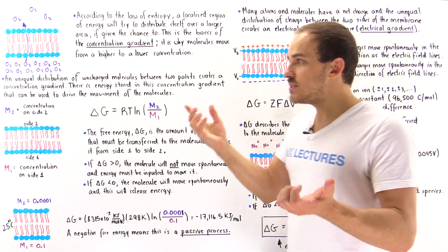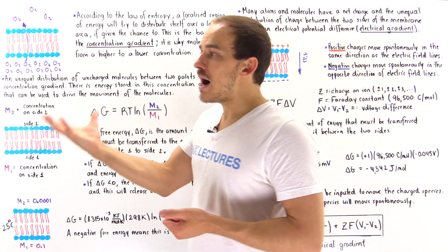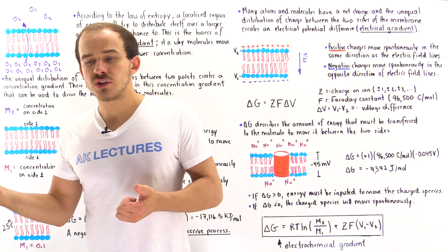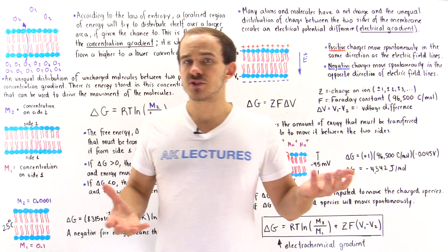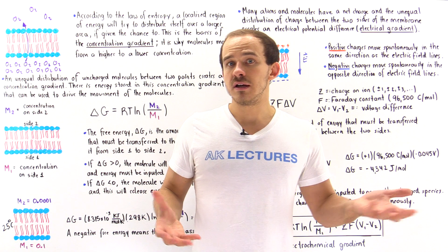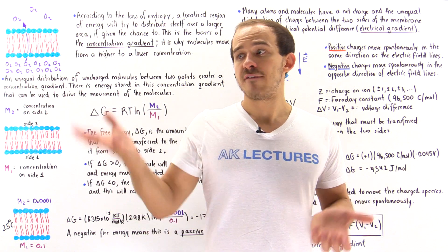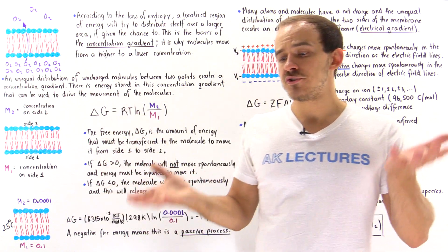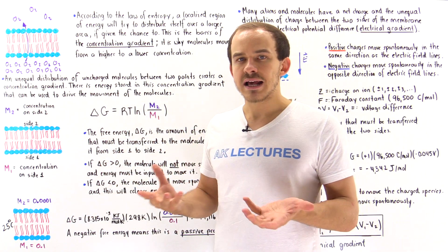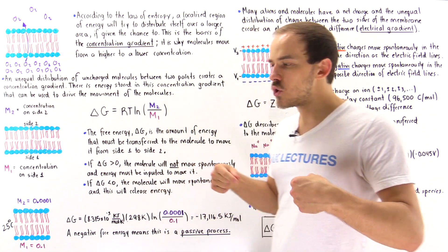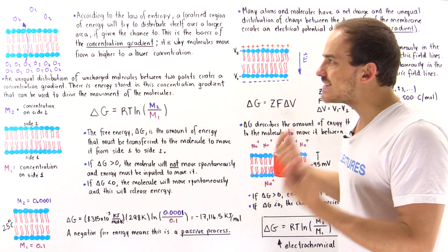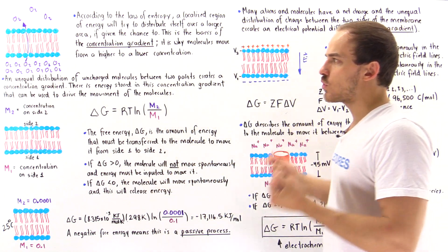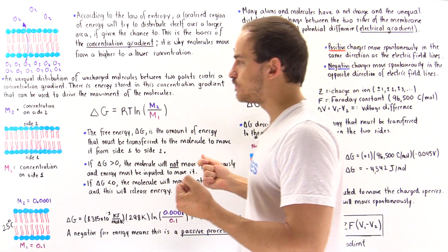For instance, if box one begins with 100 molecules and box two has none, eventually we'll have 50 in each box, so the amount of energy in both boxes will be exactly the same. This is exactly what the concentration gradient is.